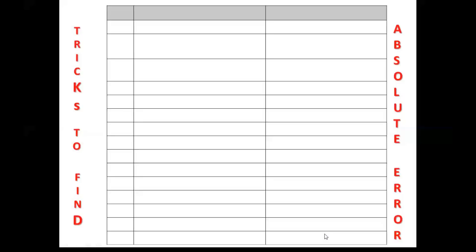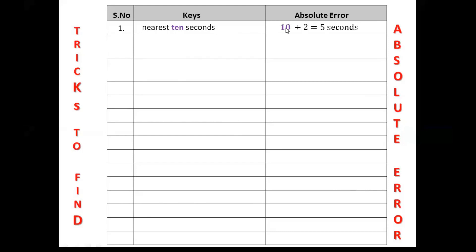You should know the key. If the key is nearest 10 seconds, the absolute error will be half of 10 seconds — that is 10 divided by 2, which is 5 seconds.